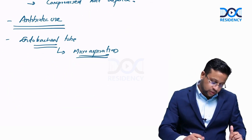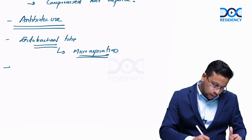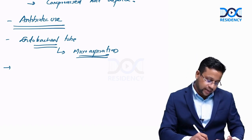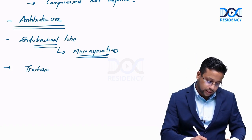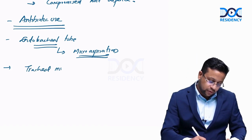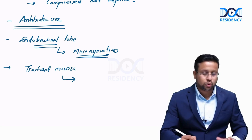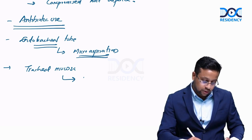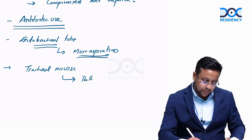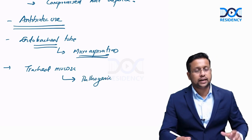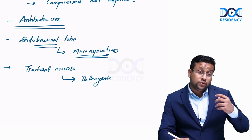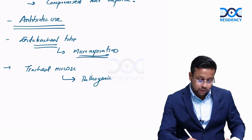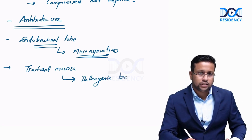Endotracheal tube suctioning can also damage the mucosa of the trachea. The damaged tracheal mucosa in turn leads to further colonization with pathogenic bacteria, so suctioning further increases colonization of the trachea.